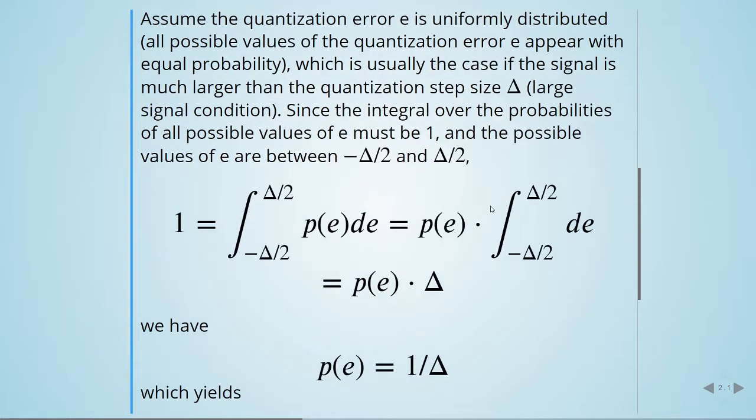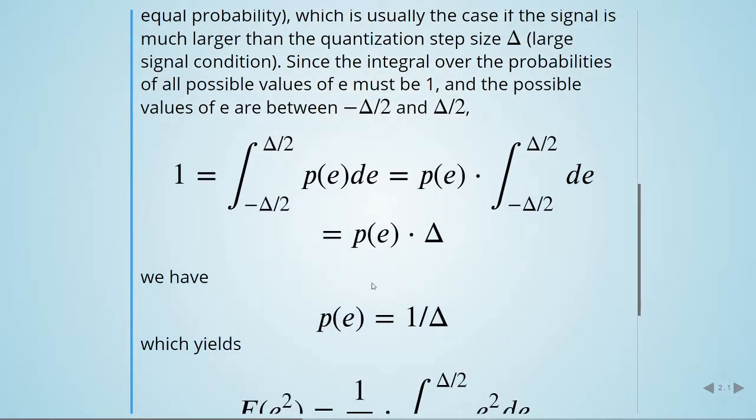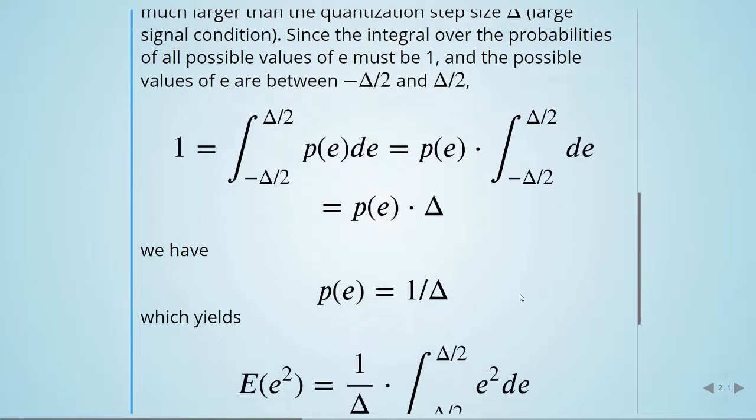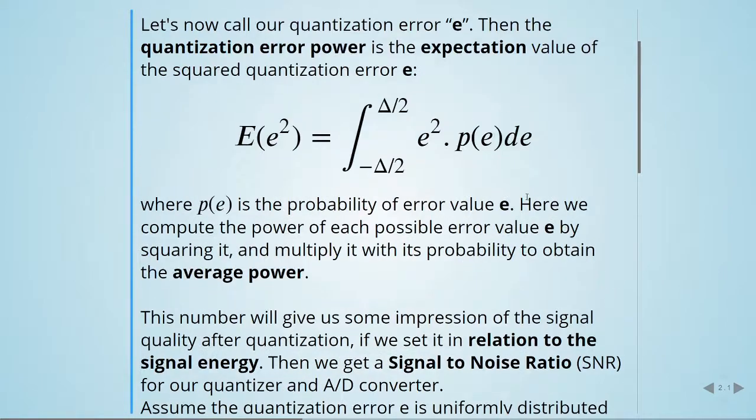When we solve this integral, we find that p(e) = 1/Δ. Going back to the definition of quantization error power as the expectation value of the squared quantization error...